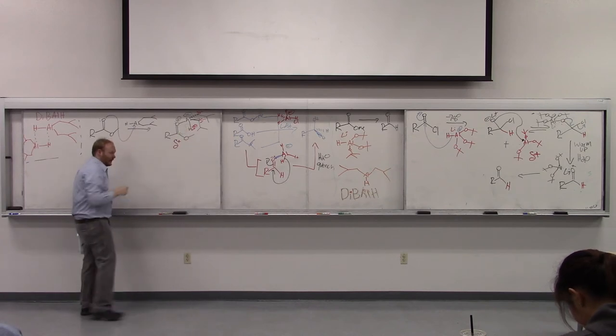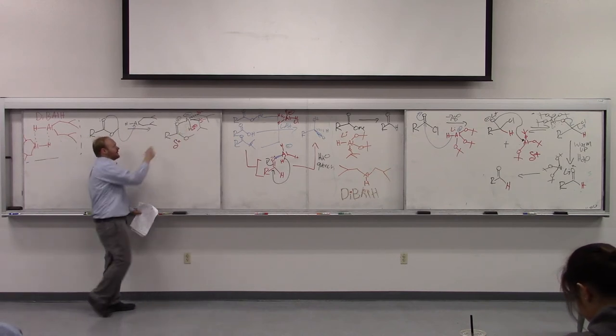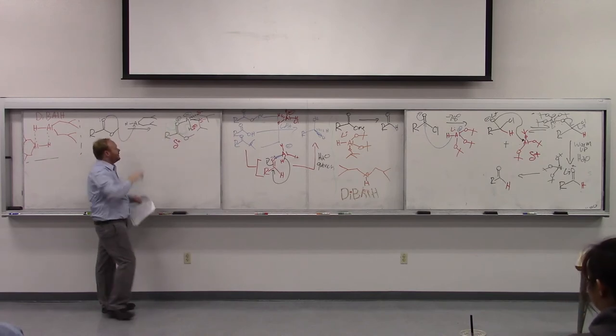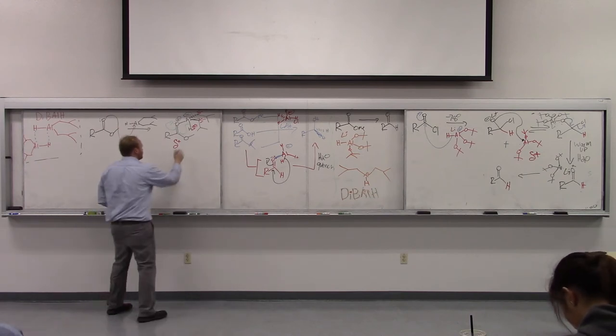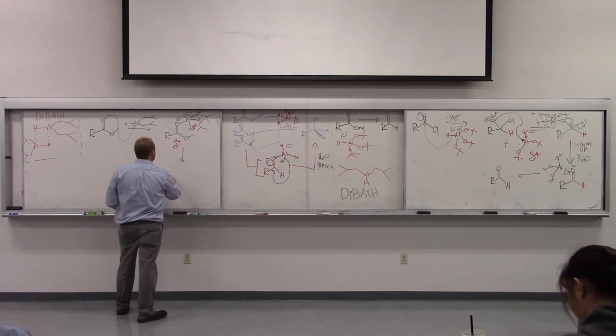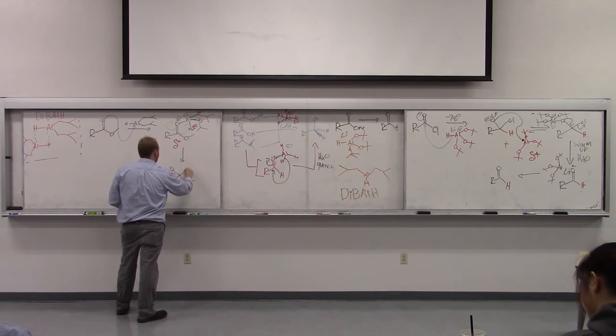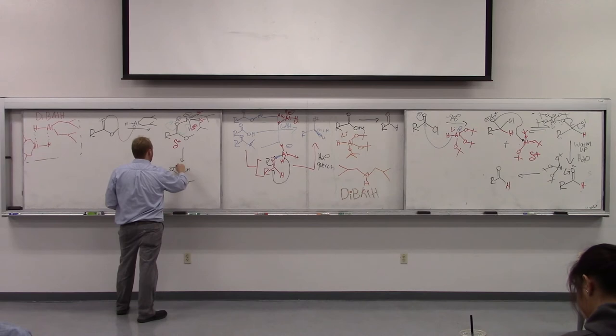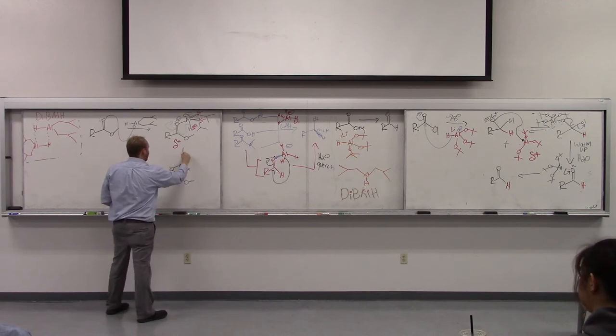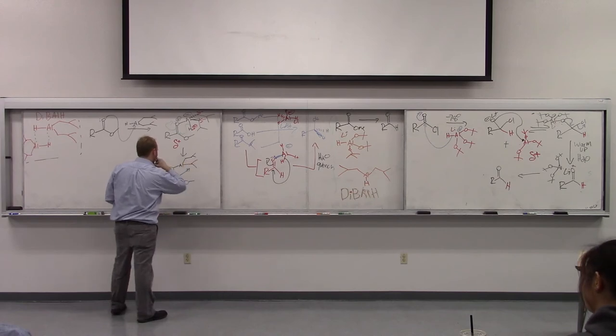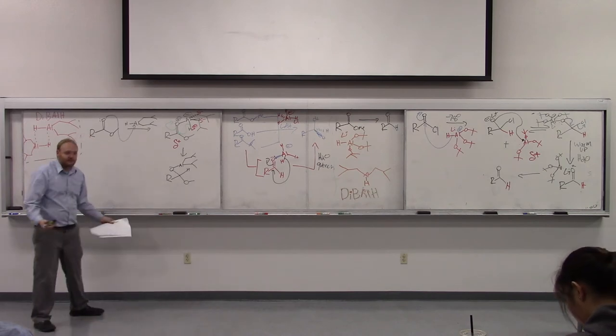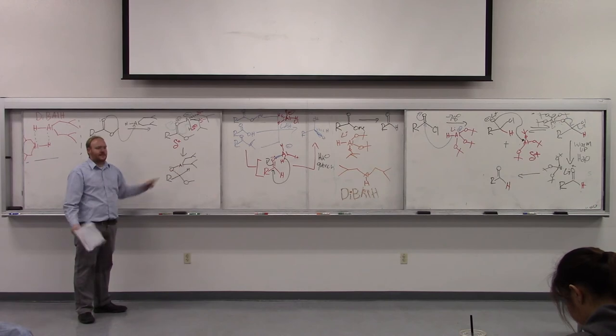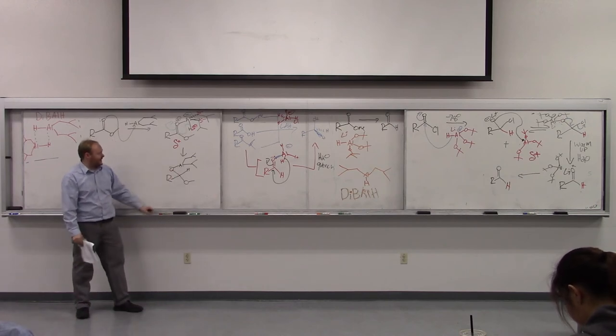So what happens then is we do this intramolecular kind of thing where this hydrogen, the electron density in this hydrogen bond is going to act as a hydride and jump into this carbonyl with this electron density going here. What that will give us is this intermediate. And this is neutral. This is a neutral aluminum. This aluminum is actually a fairly good Lewis acid. So this aluminum oxygen bond isn't going anywhere.